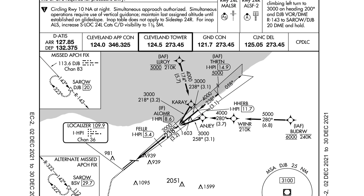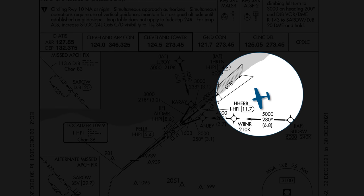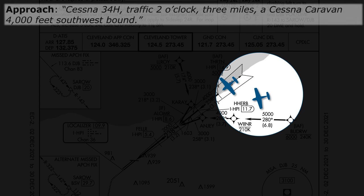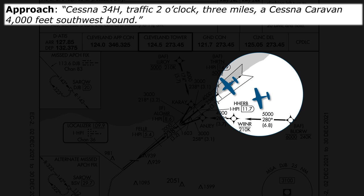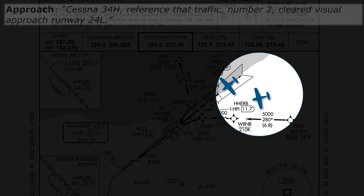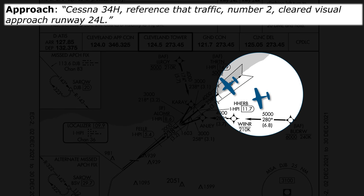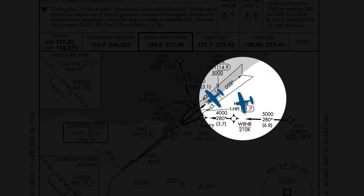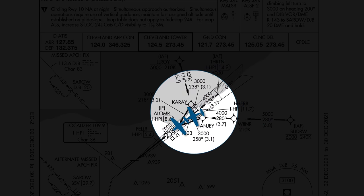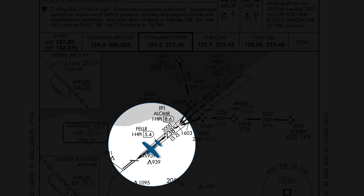Here we'll say we're approaching from the east with the localizer for runway 24L off to our right. The visibility is 6 statute miles — still VFR and sufficient for a visual approach — but we won't gain sight of the airport from this distance. Another aircraft is on a straight-in for the same runway. ATC will issue a traffic advisory: Cessna 34 Hotel, traffic 2 o'clock, 3 miles, a Cessna Caravan, 4,000 feet, southwestbound. We can't see the airport, but we have plenty of visibility to spot that traffic. So when we let approach know, they'll come back: Cessna 34 Hotel, follow that traffic, number 2, cleared visual approach, runway 24L. We're now cleared for the visual by following the Cessna Caravan in front of us. We'll keep them in sight until we gain sight of the runway; they land and we get our landing clearance from the tower.